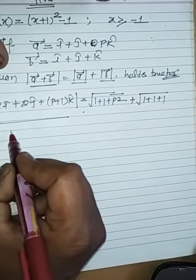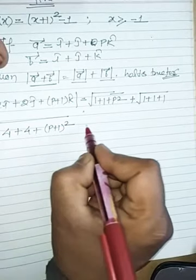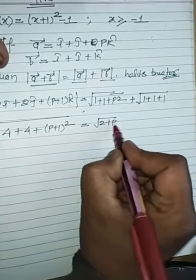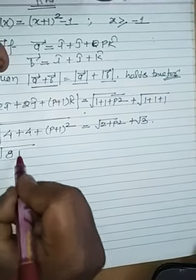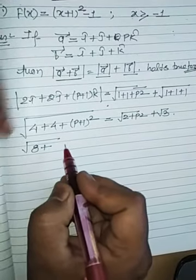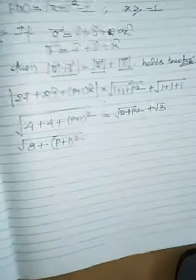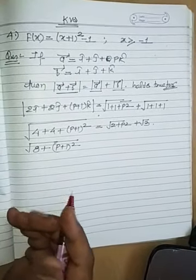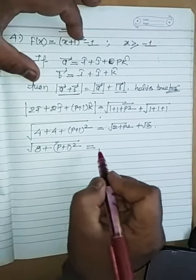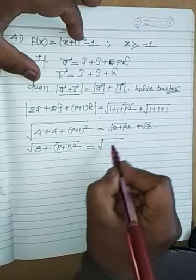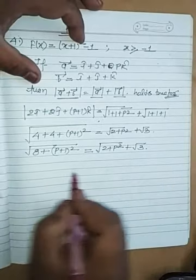This will be the root of 2 squared plus 2 squared, that's 4 plus 4 plus P plus 1 whole square. Equals to under root 2 plus P squared plus root of 3. So this will be root 8 plus P plus 1 whole square equals to root of 2 plus P squared plus root of 3.